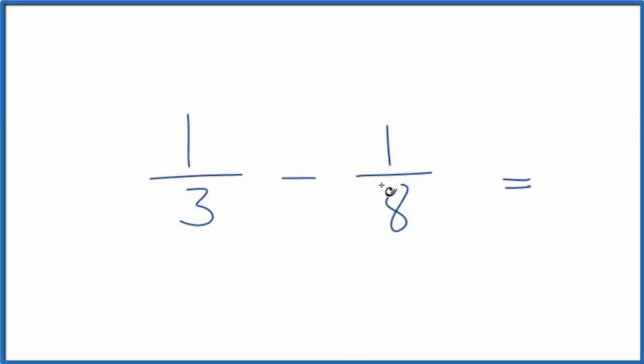In this video, we'll figure out how to subtract one-third minus one-eighth. So what we're trying to do is we're trying to find 1 over 3 minus 1 over 8, what fraction value we end up with.